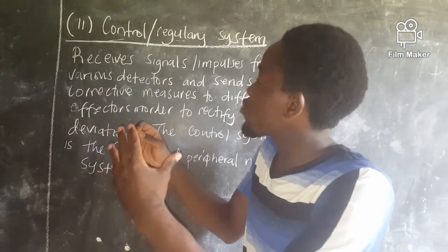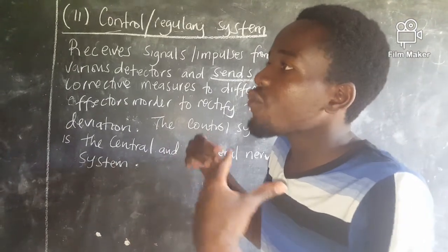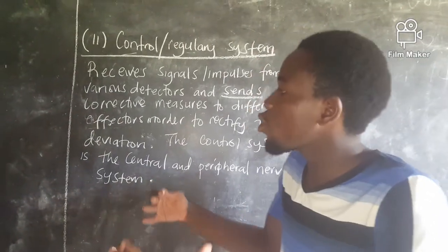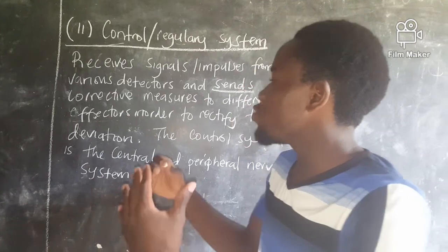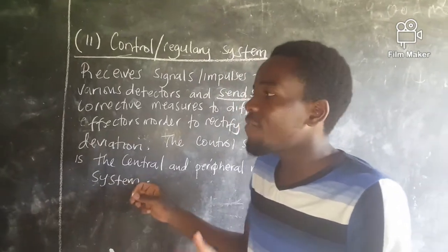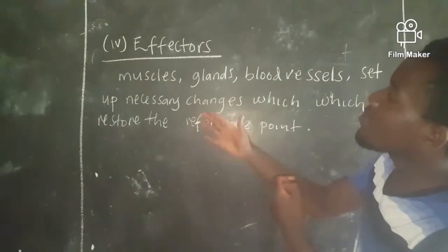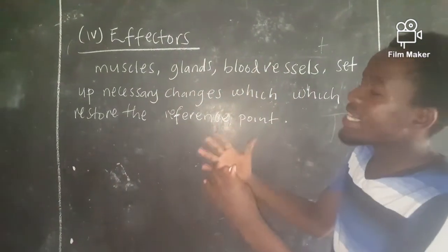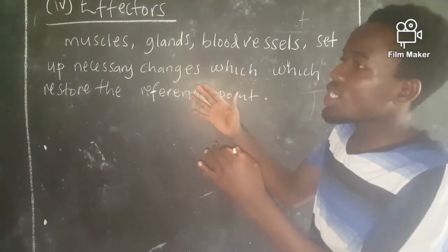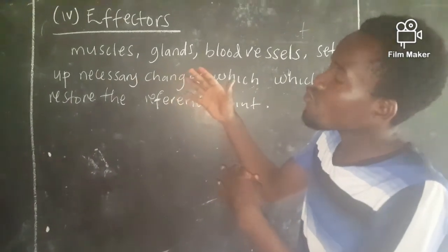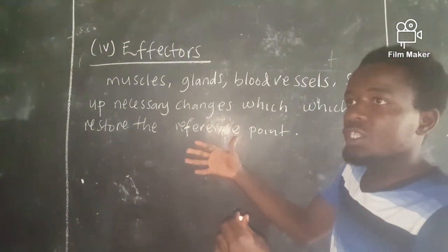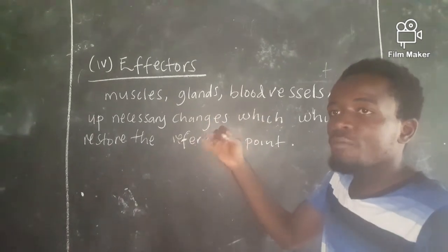The regulatory center then sends corrective measures or instructions to the effectors in order to correct the deviation. The regulatory center in most cases is the nervous system. The effectors — muscles, glands, and blood vessels — receive information from the control center and bring about a response which restores the set point.